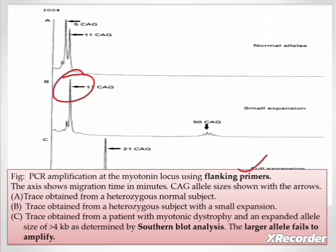This led to the fact that the large allele failed to amplify through conventional PCR, whose size was already determined to be greater than four kilobases by Southern blot analysis. Therefore, conventional PCR cannot be used for the diagnosis of trinucleotide expansion disorders.